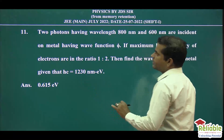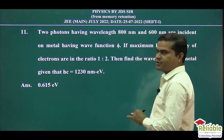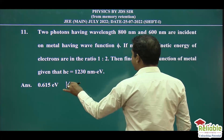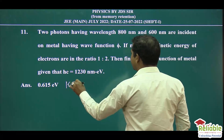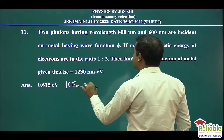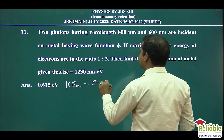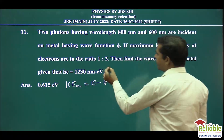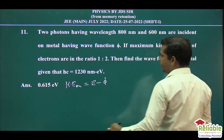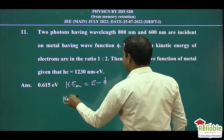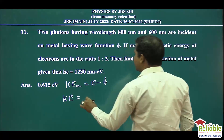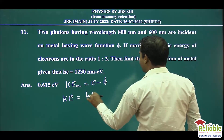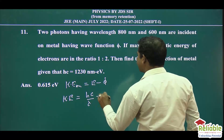We know that when any photon is incident on metal, the electrons are emitted, and the maximum kinetic energy is equal to the energy of the photon minus the work function. When two photons are incident, I can write the kinetic energy E as Hc divided by lambda minus the work function φ.